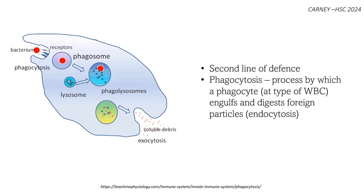Phagocytosis is a crucial process in the immune system, where certain cells — macrophages and neutrophils, types of white blood cells — work together to fight infections. When a pathogen breaches the first line, it releases chemicals that signal phagocytes, or macrophages, to travel to the site of infection. The phagocyte recognises the foreign invader through receptors on its surface and wraps its cell membrane around the pathogen, forming a sac-like structure called a phagosome.